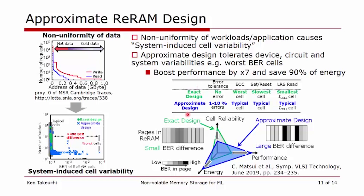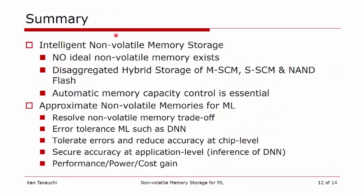In summary, I have introduced the status of non-volatile memory storage. Memory is not ideal, so we have to have a hybrid structure of various kinds of memories, and naturally we need automatic capacity control because the operation cost by human management is too expensive. This is a tough issue for data center operators. But in the case of emerging AI applications, we can introduce approximate computing, resolve the non-volatile memory trade-off by tolerating errors, and gain performance, power, and cost advantages. Thank you very much.